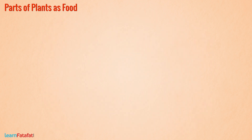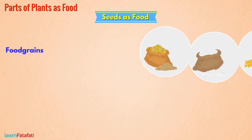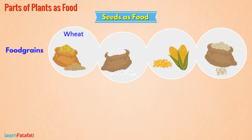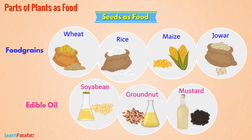Seeds are a very important part of our food. Most of the seeds are in the form of food grains. For example, wheat, rice, maize, jowar, etc. From the seeds of plants like soybean, groundnut, and mustard, we obtain edible oil.